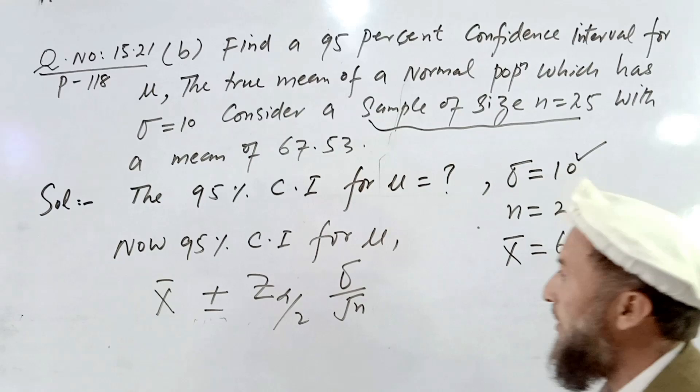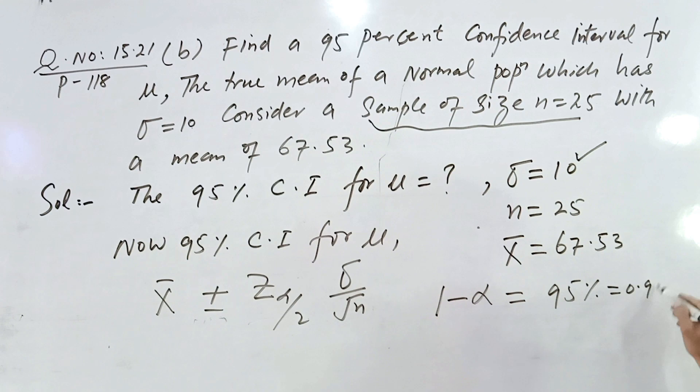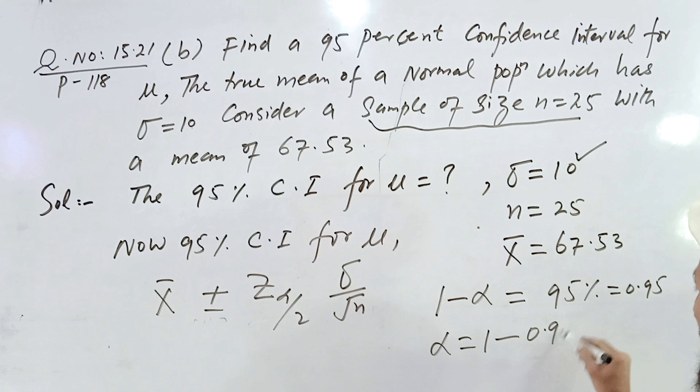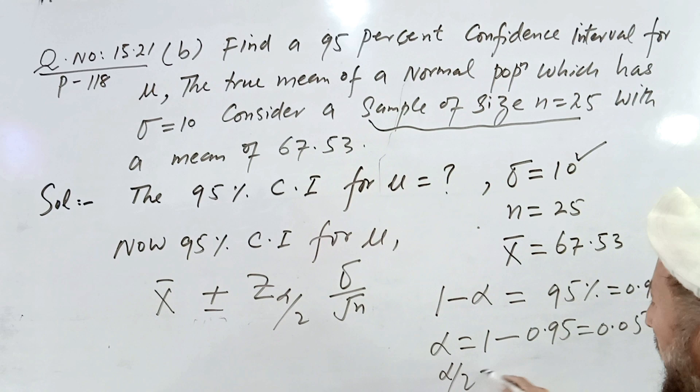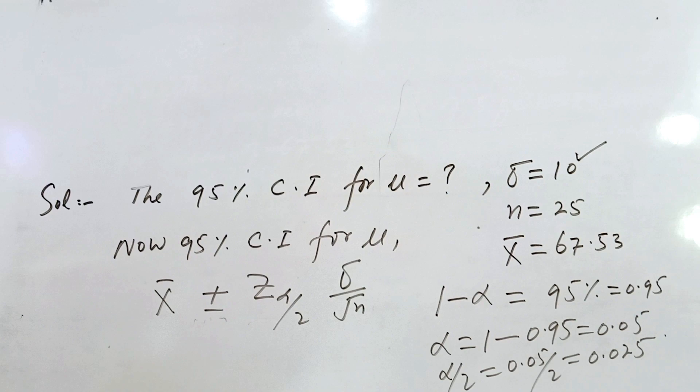Now, 95% is given, which means 1 minus alpha equals 0.95. Therefore alpha is equal to 1 minus 0.95, which gives us 0.05. Then alpha divided by 2 is equal to 0.05 divided by 2, which equals 0.025.